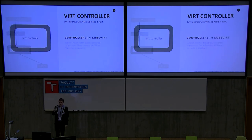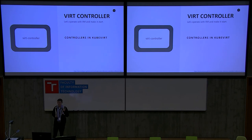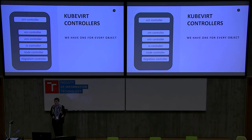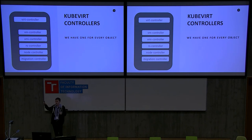We have quite a few controllers in KubeVirt — I already told you about two of them, and we have three more. There's a replica set controller, which manages scaling of your VMIs. We have a node controller, which checks if a node is unresponsive; if it is, the controller marks that node as unresponsive so we know we need to move the virtual machine somewhere else. And this is done by a migration controller — we have very basic migration support right now, but it is there.